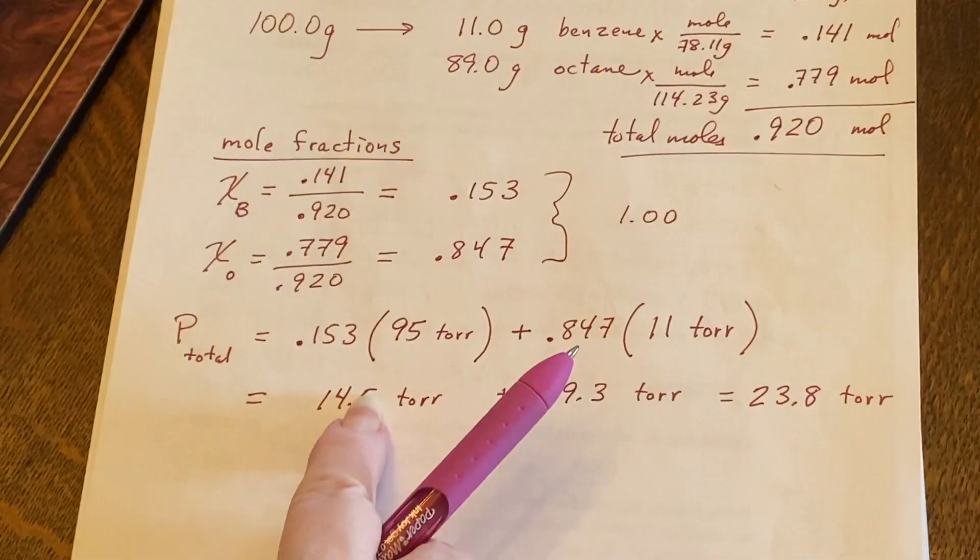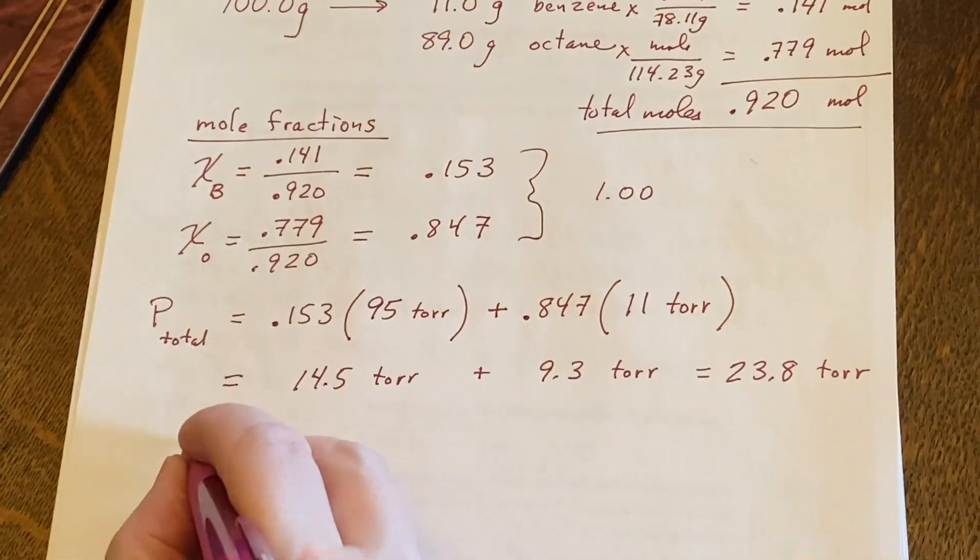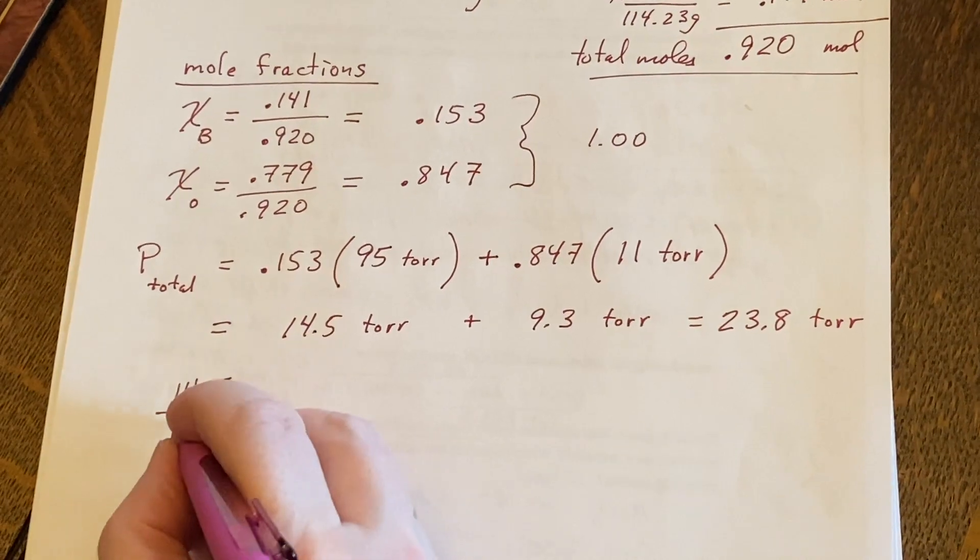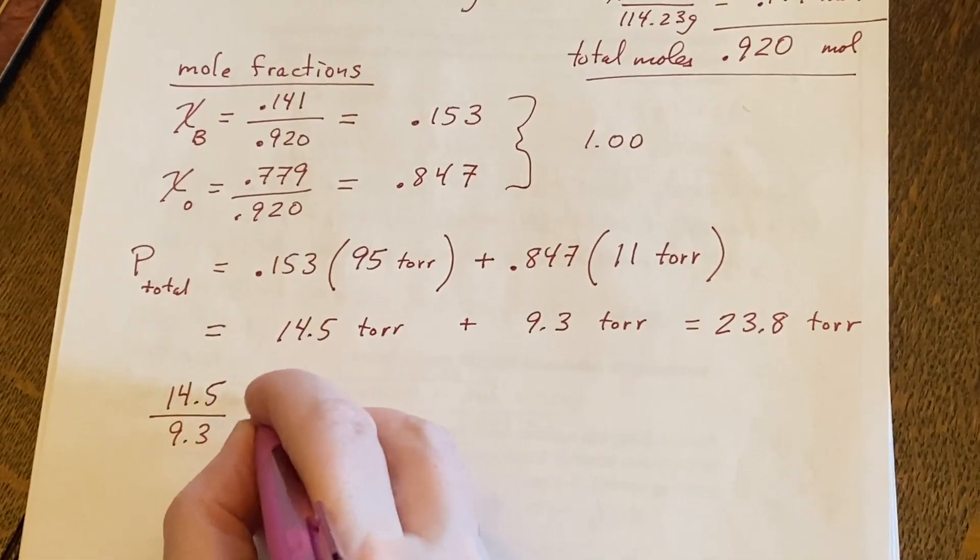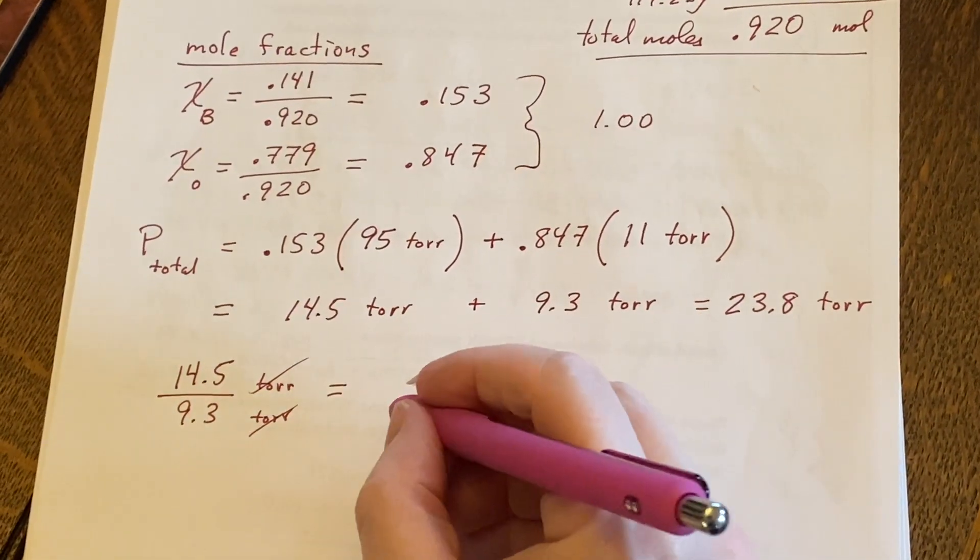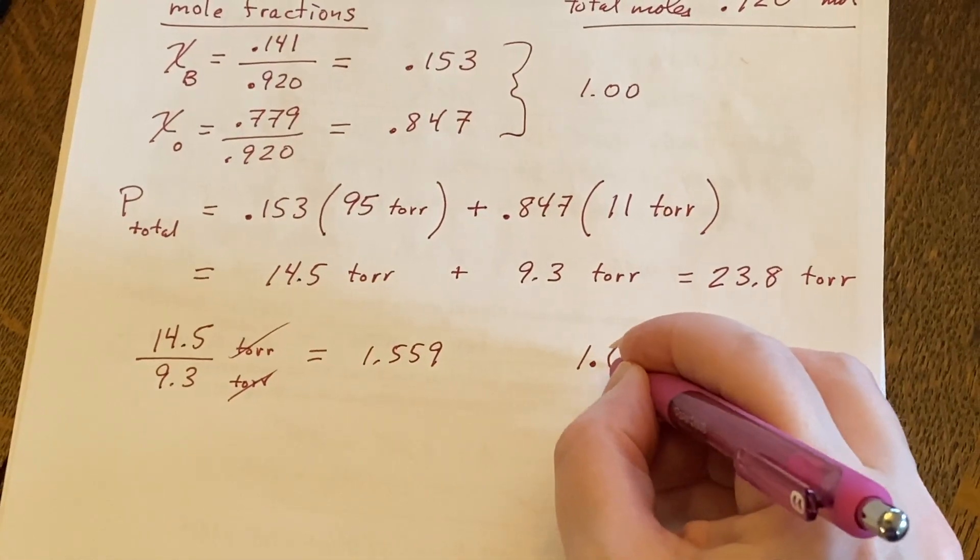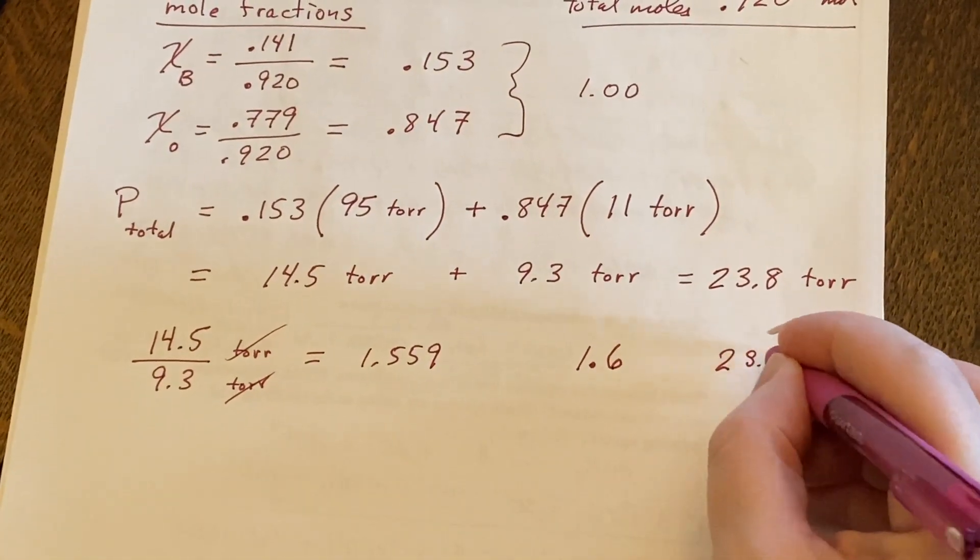they wanted it as a mole ratio of benzene to octane. This one was the benzene, and that one is the octane. So benzene over octane, 14.5 over 9.3. And the torrs are going to cancel out. And that will give us 1.6, because I only have two significant figures.